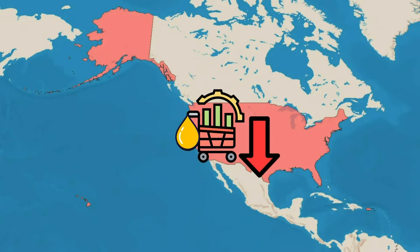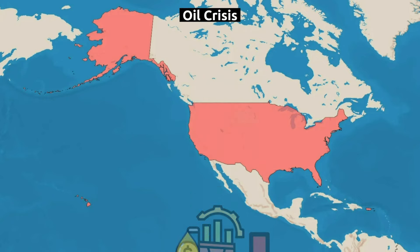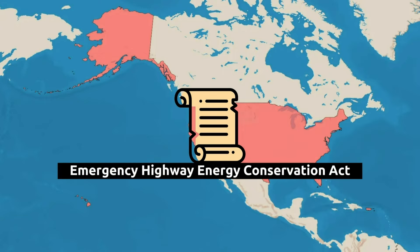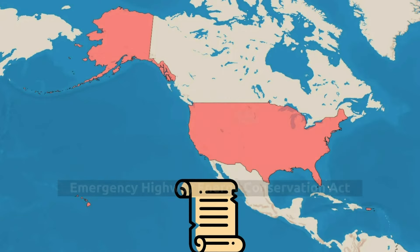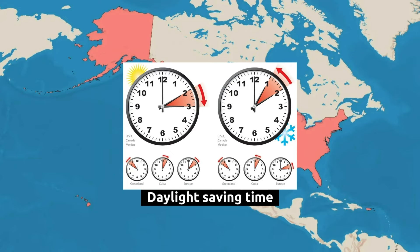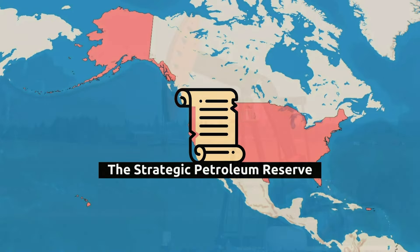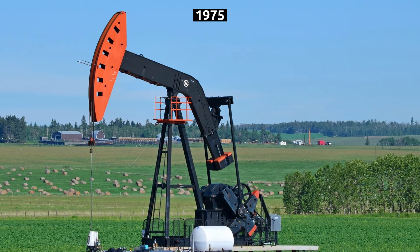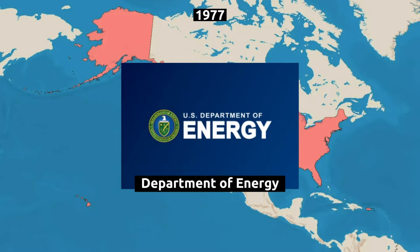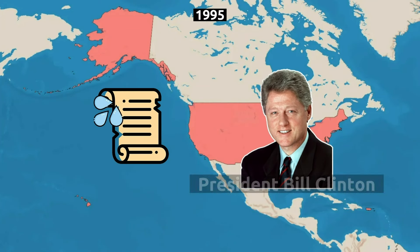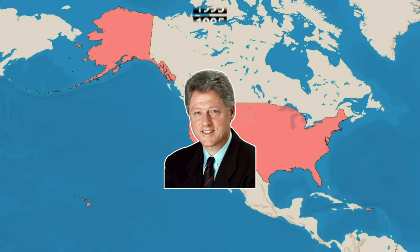To reduce consumption during the oil crisis in the U.S., a national maximum speed limit of 55 miles per hour was imposed through the Emergency Highway Energy Conservation Act, and year-round daylight saving time was implemented from 1974 to 1975. The Strategic Petroleum Reserve was developed in 1975, and the Department of Energy was created in 1977. The federal 55 miles per hour speed limit was ended in 1995 by President Bill Clinton, allowing states to restore their prior maximum speed limits.